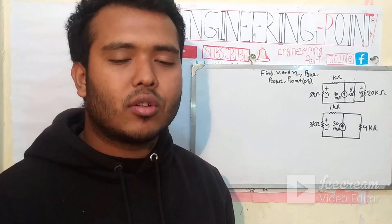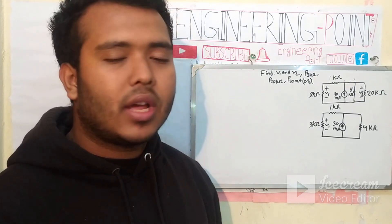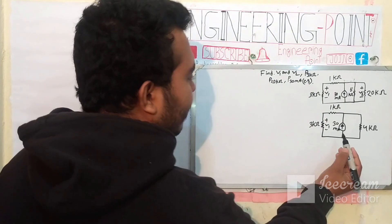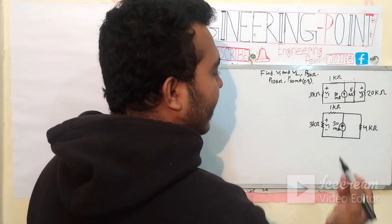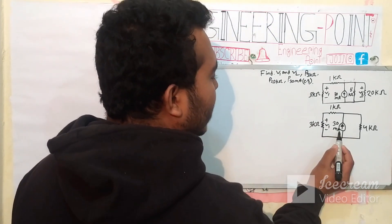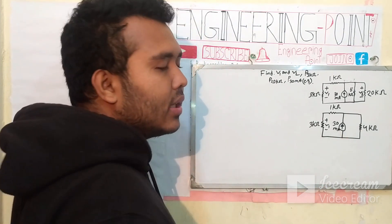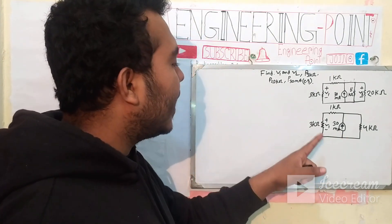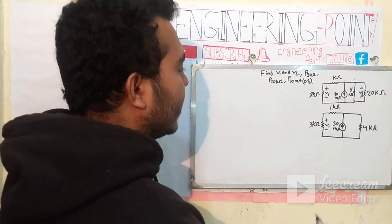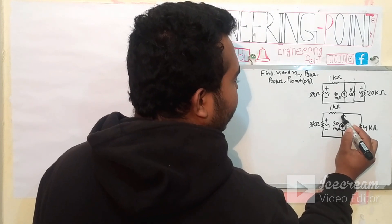We have the voltage. When we have the current, we get the voltage from the current. At this point, we have voltage from the current. This current — we do not have another value — the current is 30 mA. The current is 30 mA.